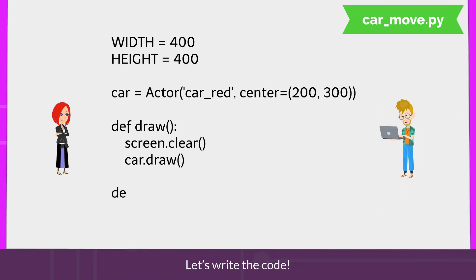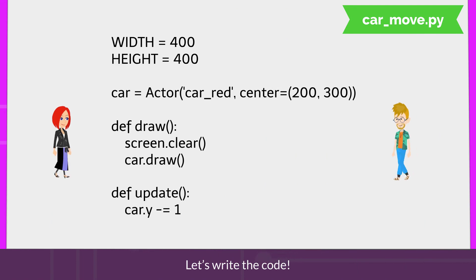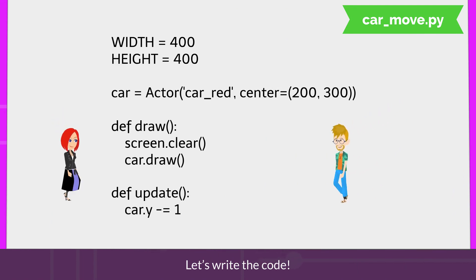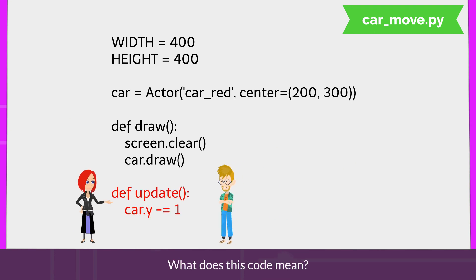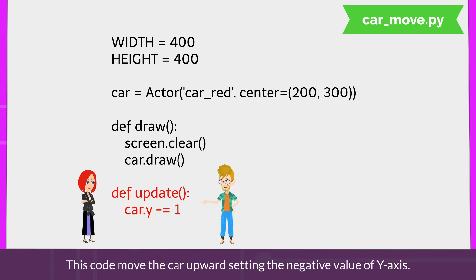Let's write the code. What does this code mean? This code moves the car upward by setting a negative value on the Y-axis.